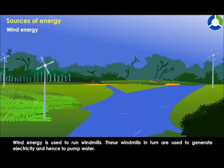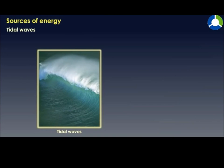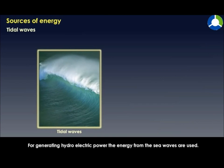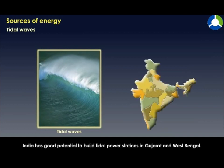Wind energy: wind energy is used to run windmills. These windmills in turn are used to generate electricity and to pump water. Tidal waves: for generating hydroelectric power, the energy from sea waves is used. India has good potential to build tidal power stations in Gujarat and West Bengal.